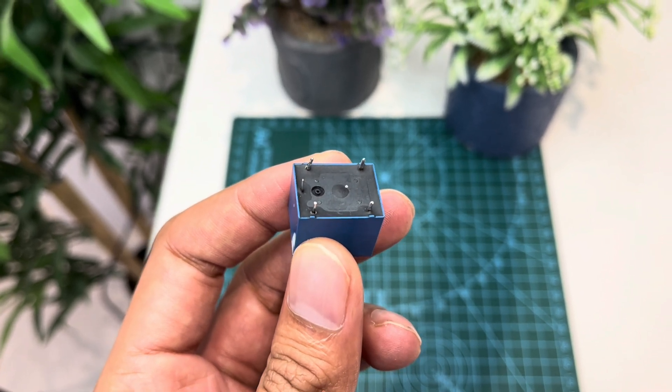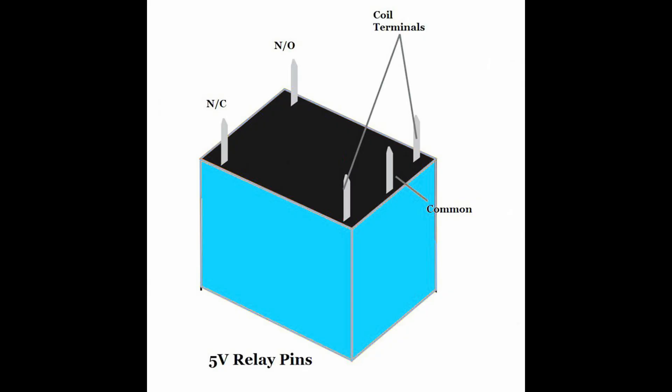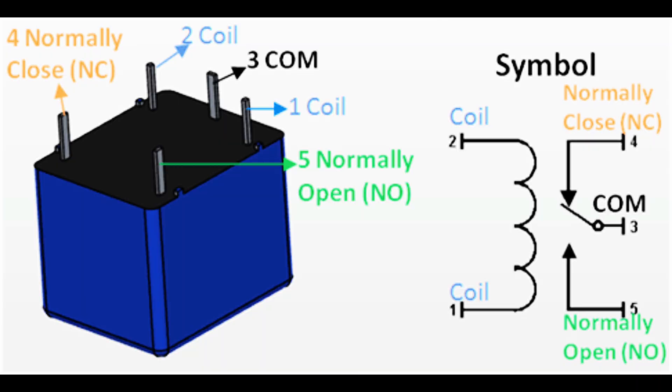This is the common PC board relay which consists of 5 pins. You can see there are 5 pins in this relay. Let us mark these pins from 1 to 5 and see what's the function of each pin.